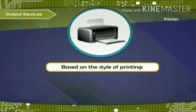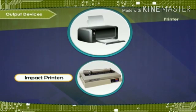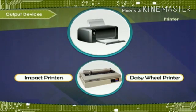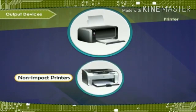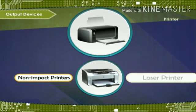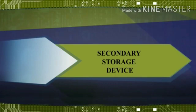Based on the style of printing: Impact printers work like typewriters, where the print head strikes against the printer ribbon and paper — example, daisy wheel printer. Non-impact printers work like photocopy machines; various methods are used to form the image of the characters on the paper — example, laser printer.